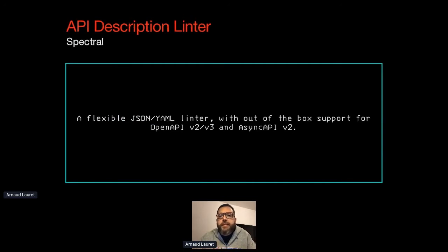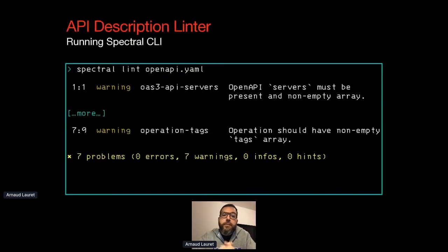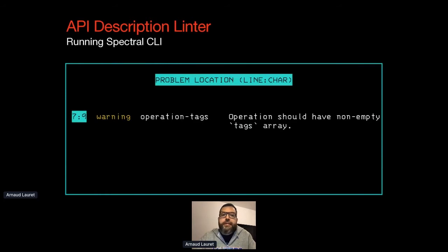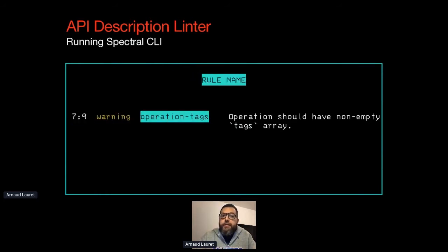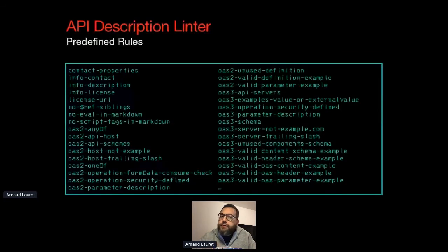Now that we have a machine-readable description of an API, we can analyze it with a linter. Instead of reinventing the wheel, I used Spectral, which is an open-source linter that can analyze data such as OpenAPI documents, AsyncAPI documents, Kubernetes configuration files, or any other JSON or YAML document. Linting an OpenAPI file with the Spectral CLI is quite simple — open a terminal and type 'spectral lint' followed by the OpenAPI file.